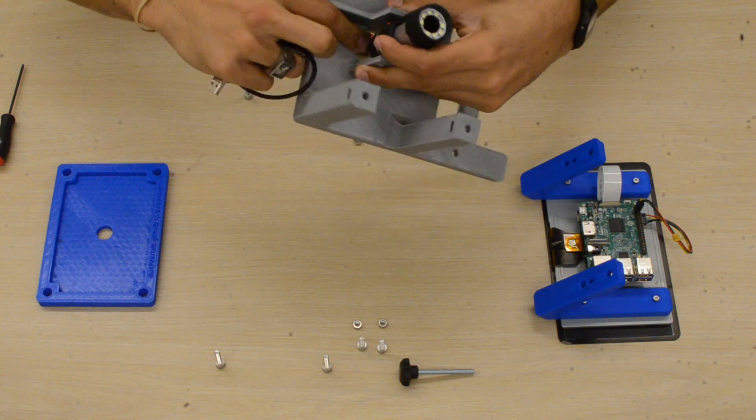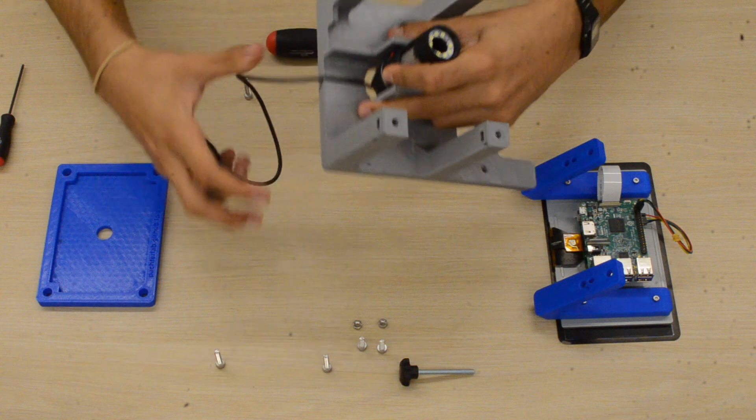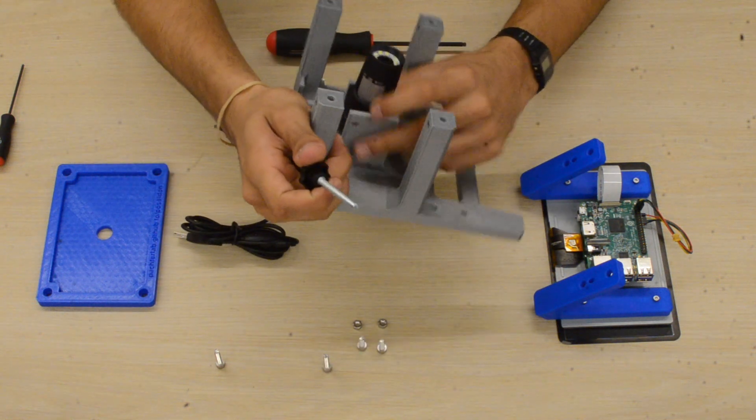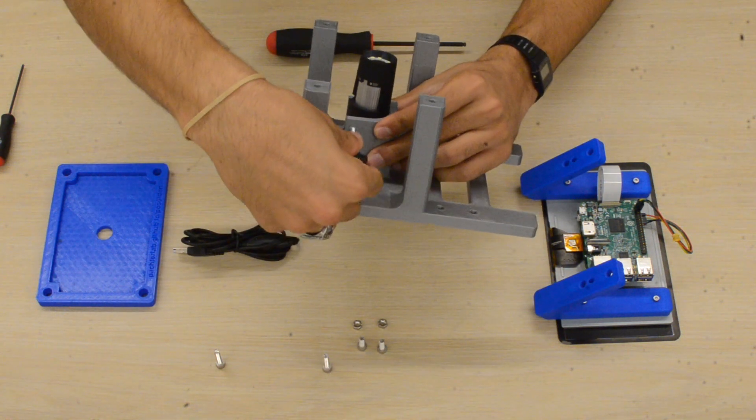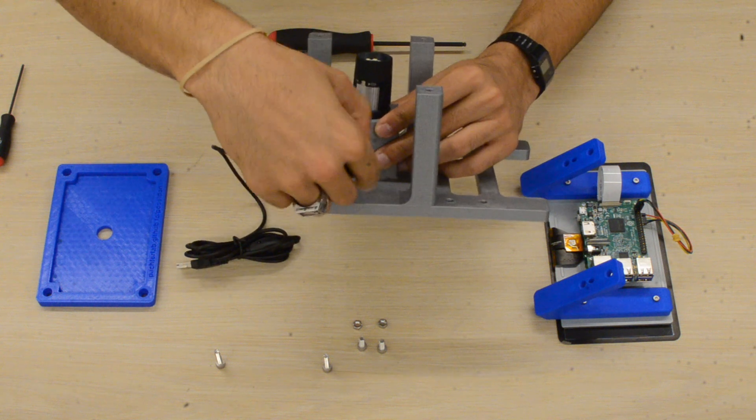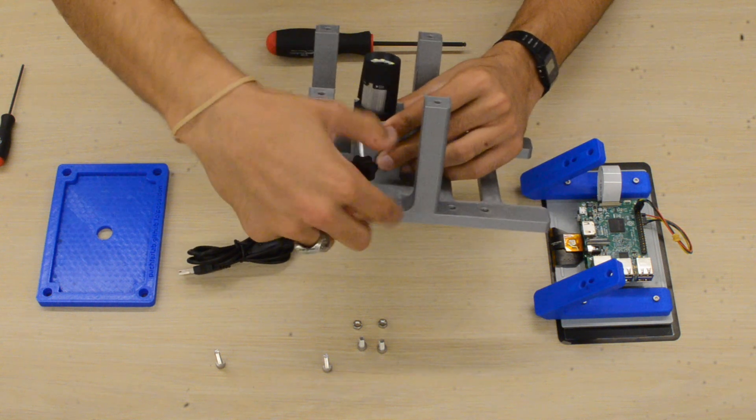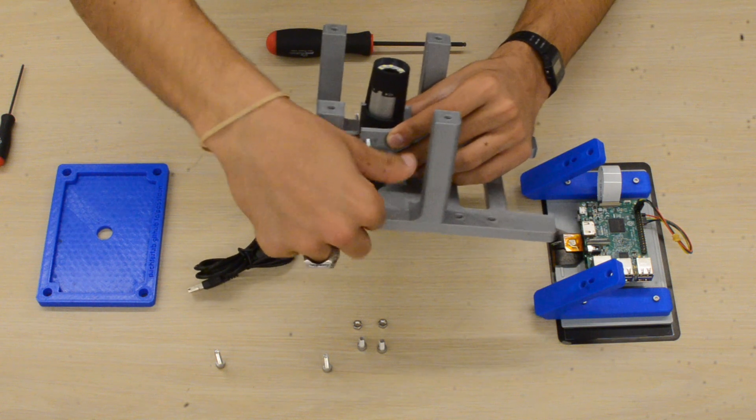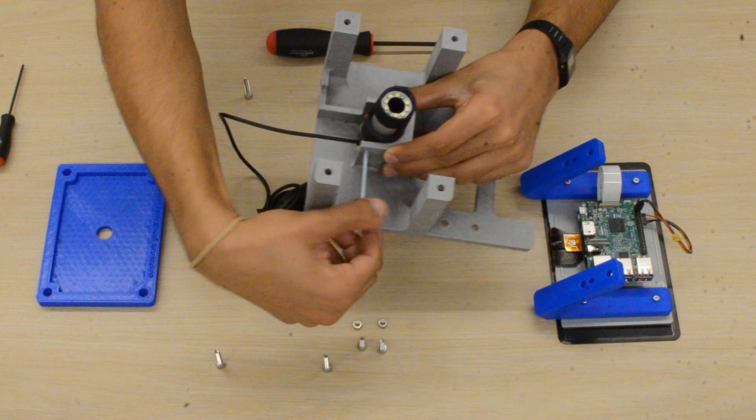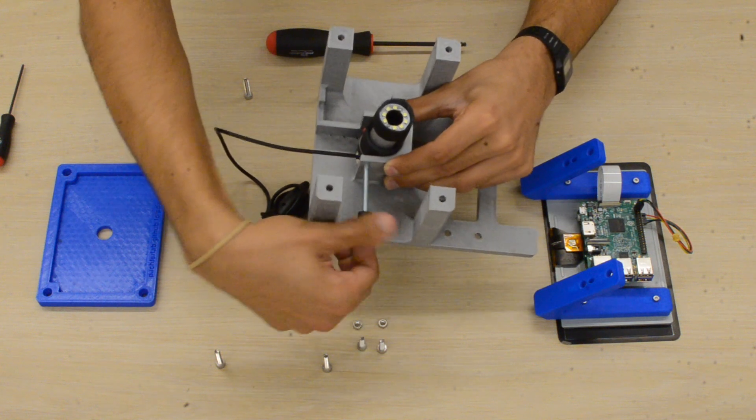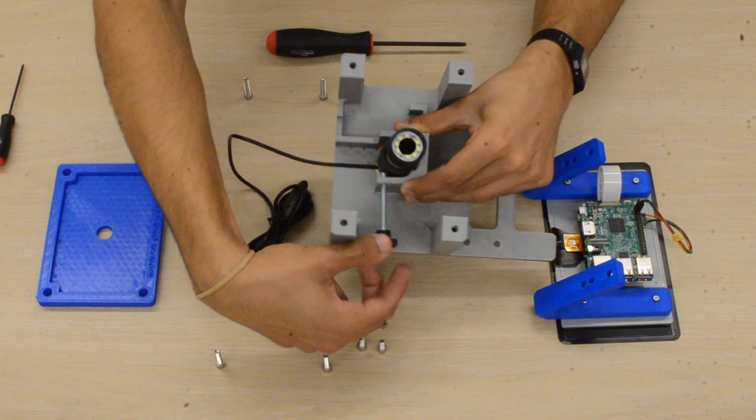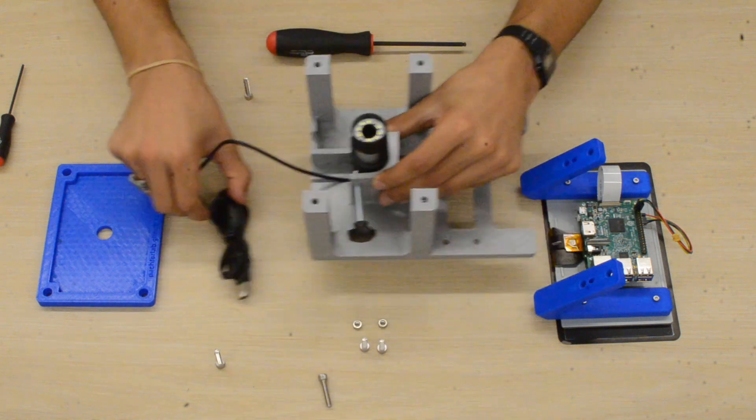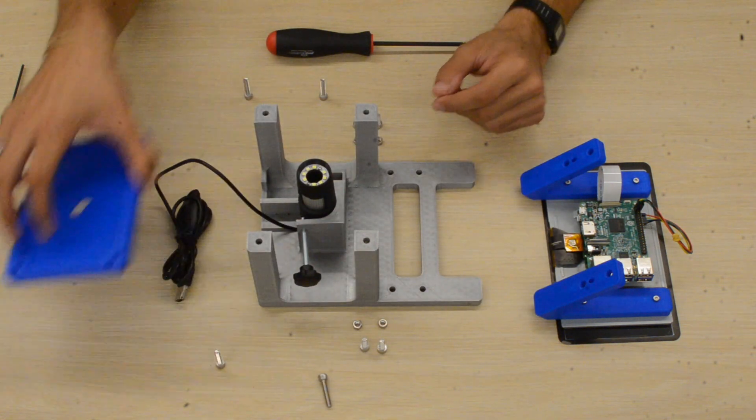Then we'll take our M5 knob and thread it through the associated hole. It should be pretty easy to do as well, and this knob will actually hold the camera in place so you can adjust it up and down and then lock it in place for the proper focus.